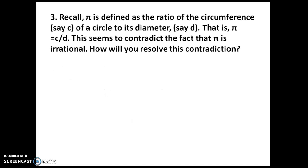Moving to the next problem. Recall π is defined as the ratio of the circumference C of a circle to its diameter D. That is, π = C/D. This seems to contradict the fact that π is irrational. How will you resolve this contradiction? We all learned that π is a constant which is the ratio of circumference to diameter, always of the ratio 22/7.